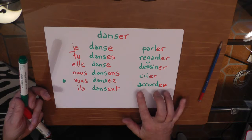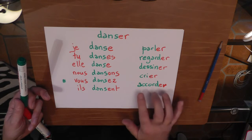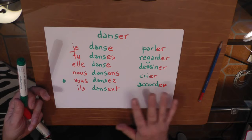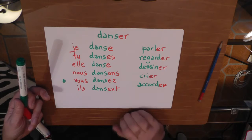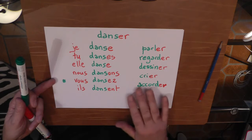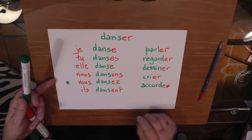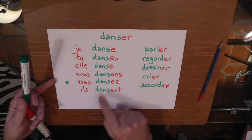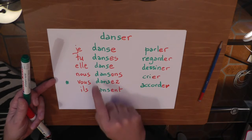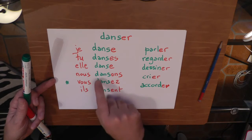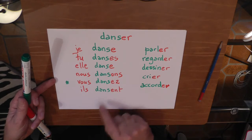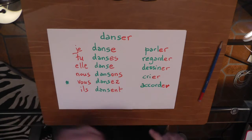There is another meaning of 'accorder' — to reach an agreement. But for now, just remember it like tuning a guitar. The conjugation: j'accorde, tu accordes, il accorde, nous accordons, vous accordez, ils accordent. It follows exactly the same pattern as the other first-group verbs.